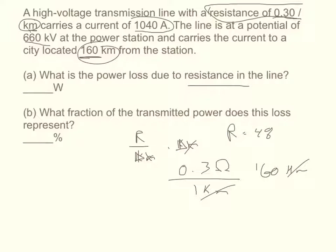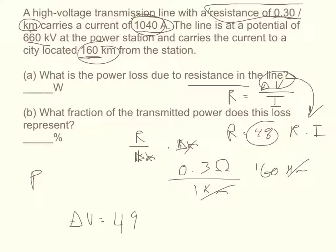Now the definition of resistance is R equals delta V, so the change of voltage through the resistor over the current. And because all of our definitions for power require us to know delta V, we need to find delta V as it goes through the resistor. So we take delta V equals R times I, resistance times current. We can find delta V as R times I. So you would take your 48 ohms and multiply that by the 1,040 amps, and you would get that delta V through the resistor is equal to 49,920 volts.